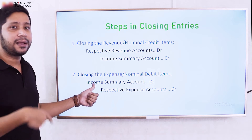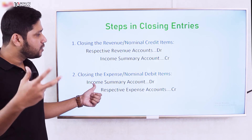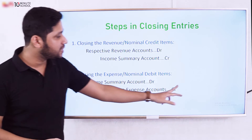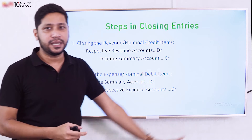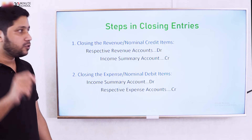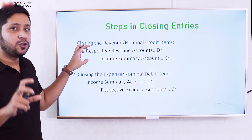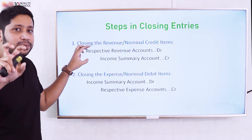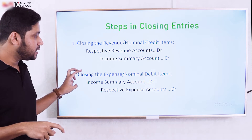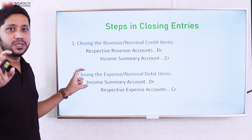When we credit the expense accounts to close them, we transfer the balance to the income summary by debiting the income summary. For example, if total expenses are $70,000, we credit all expense accounts and debit income summary for $70,000, bringing the expense accounts to zero.